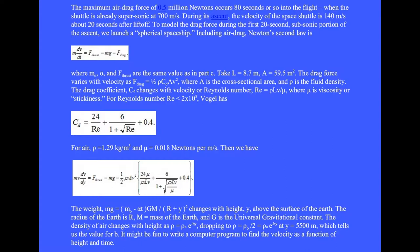Where A is the cross sectional area, rho is the fluid density. The drag coefficient c sub d changes with velocity or Reynolds number, which is rho l v over mu, where mu is viscosity or stickiness. For a Reynolds number less than 2 times 10 to the 5th, Vogel has drag coefficient equals 24 over the Reynolds plus 6 divided by 1 plus the square root of the Reynolds number plus 0.4.